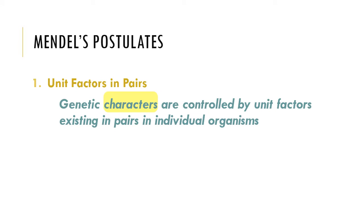Mendel's first postulate, that unit factors occur in pairs, states that genetic characters are controlled by unit factors existing in pairs in individual organisms. Recall from the video lesson on overview of heredity topics how we defined what a character is. Characters are controlled by unit factors. Mendel was referring to genes when he thought of unit factors. Mendel even said that these unit factors exist in pairs.